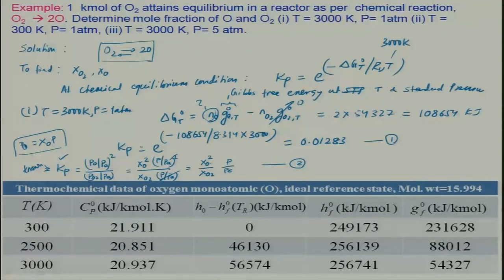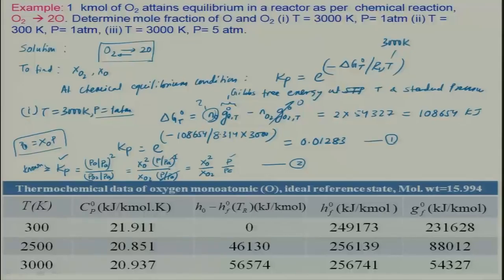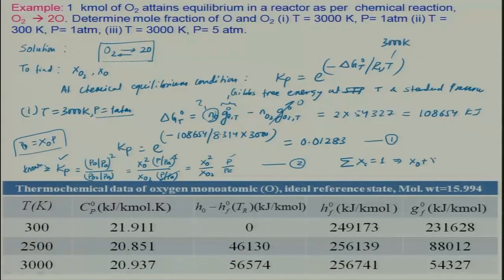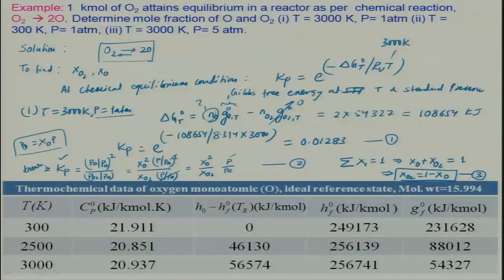For Case 1, P is 1 atmosphere, so P/Pa = 1. We have two unknowns and one equation, so we use the mole fraction constraint: xO + xO₂ = 1, giving xO₂ = 1 − xO (Equation 3). Combining Equations 2 and 3, we get: Kp = xO² / (1 − xO) · (P/Pa), which rearranges to the quadratic: (P/Pa)·xO² + Kp·xO − Kp = 0 (Equation 4).